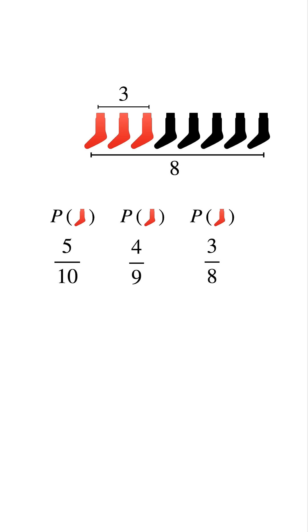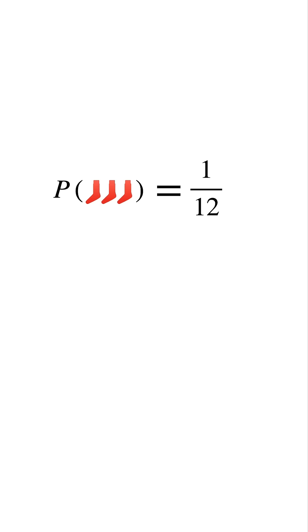Now, because all 3 must happen together, we multiply 5 tenths times 4 ninths times 3 eighths. This simplifies nicely down to 1 twelfth. So the probability of drawing 3 red socks in a row without replacement is 1 out of 12.